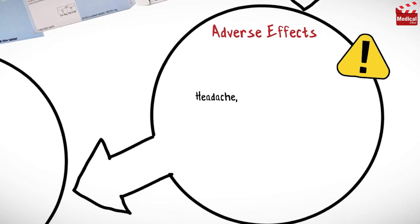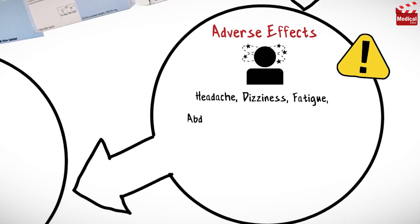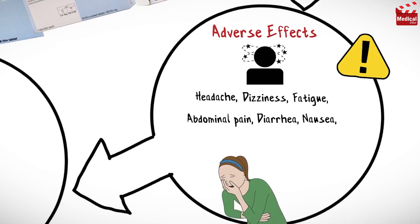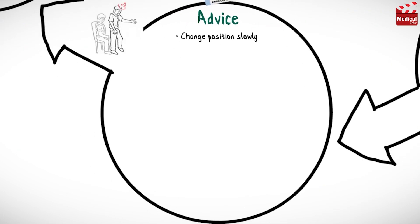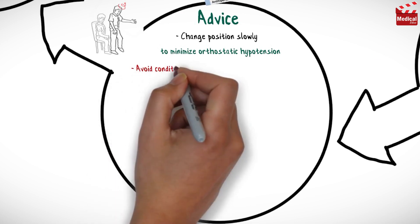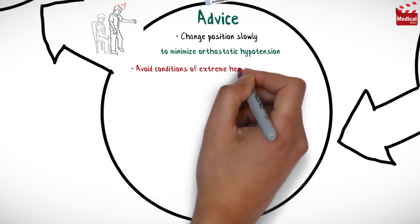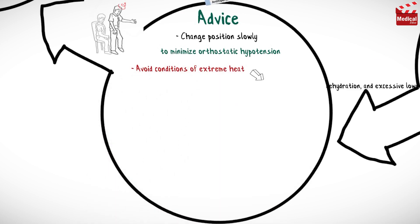Valsartan may cause headache, dizziness and fatigue, abdominal pain, diarrhea, nausea, and arthralgia. Change position slowly to minimize orthostatic hypotension, and avoid conditions of extreme heat as this may lead to dehydration and excessive lowering of blood pressure.